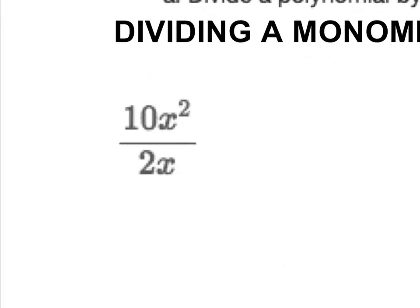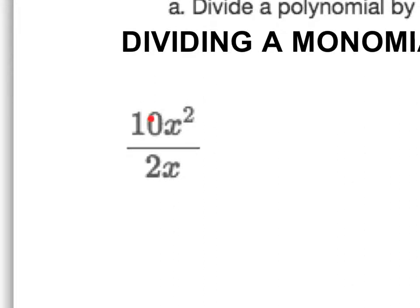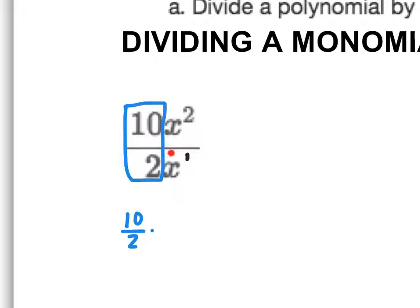Let's take a look at our first one. The first one is 10x squared divided by 2x. I'm going to divide my coefficients — the numbers in front of my variable — and then subtract my exponents. This is an exponent of one here. I'm going to look at these separately: 10 divided by 2, and I'm going to write that as 10 over 2, multiplied by my variables x squared divided by x.